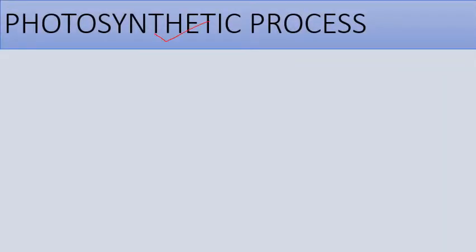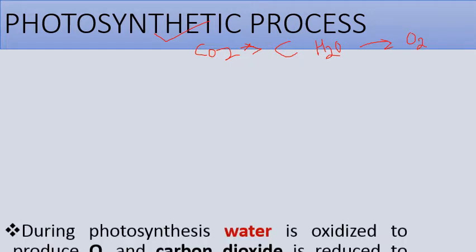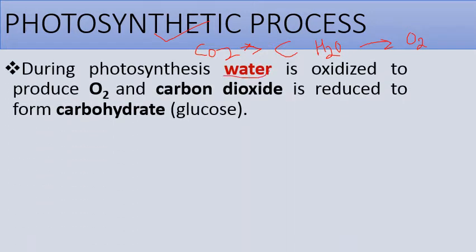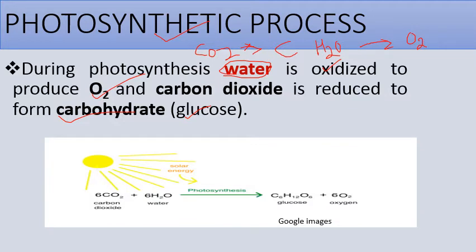The photosynthetic process involves reduction of carbon dioxide into carbohydrate, and oxidation of water to produce oxygen. During photosynthesis, water is oxidized to produce oxygen, while carbon dioxide is reduced to form carbohydrate, that is glucose. This is the basic but complicated photosynthetic process.